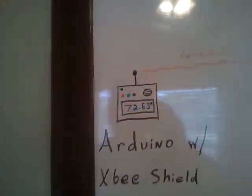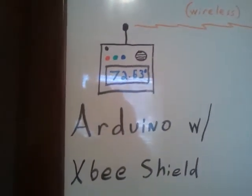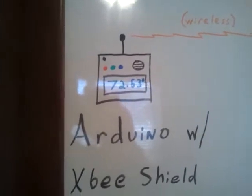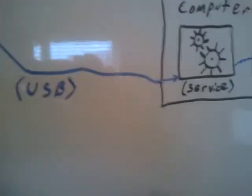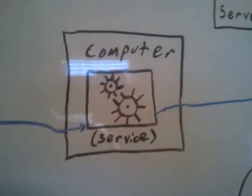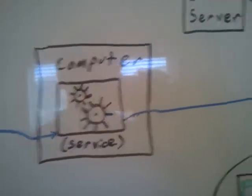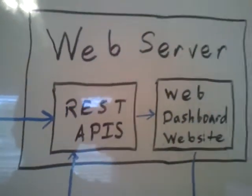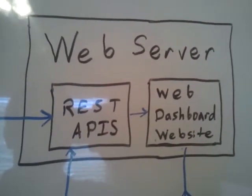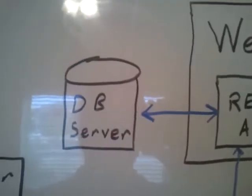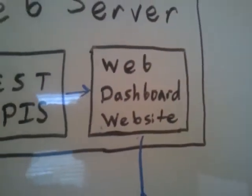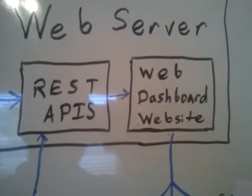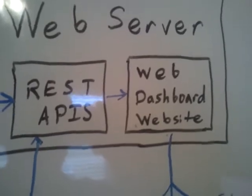Here's kind of how it works. We've got an Arduino board that is hooked up to some stuff including a temperature sensor and a wireless XBee shield. It communicates over to this XBee receiver wirelessly and goes into the computer, which communicates to the service I wrote, which in turn communicates with REST APIs on this server. The REST APIs put it in this database and also communicate with this web dashboard website that I wrote. All of this is using MVC4 and Web API from Microsoft, and then we communicate out to our clients.